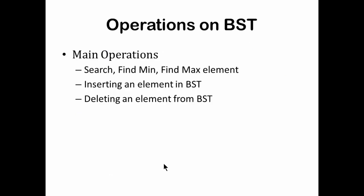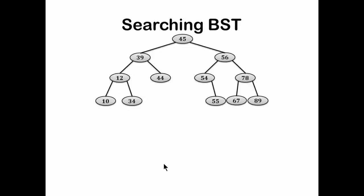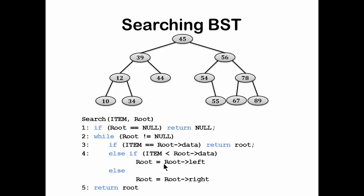The main operations on a BST are search, finding the minimum element, finding the maximum element, inserting an element, and deleting an element. To search an element, you call the search function with the item and the root. If root is null, there is no tree and you return null. Otherwise, a while loop runs until root becomes null, comparing the item with root data each time. If item equals root data, return that root. If less, move root to the left; if greater, move root to the right.